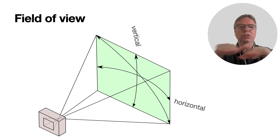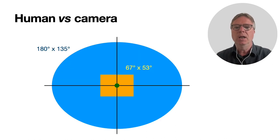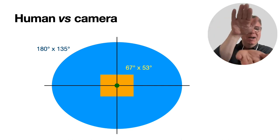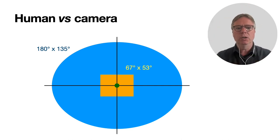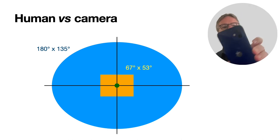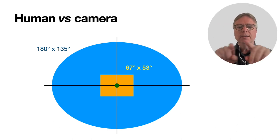A field of view you can define or simplify in a horizontal one and a vertical one. If you look at the human field of view, it has an elliptical shape - that's the blue area - roughly 180 by 135. But if I look at the orange parts, it's basically a standard picture. If I take a picture with my iPhone, it's 67 degrees horizontally and 53 degrees vertically, so that's way smaller than the field of view of a human.